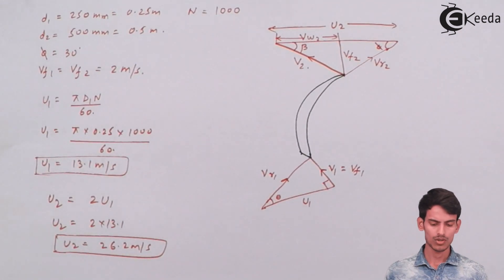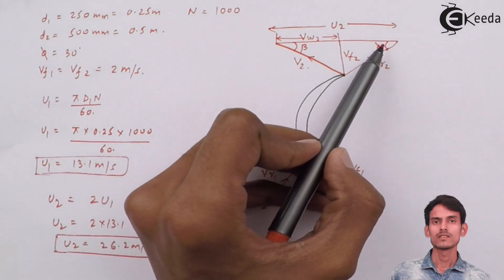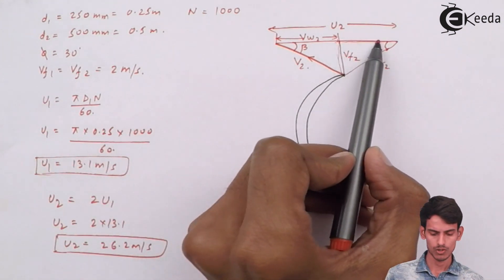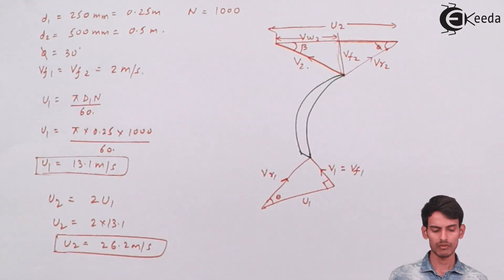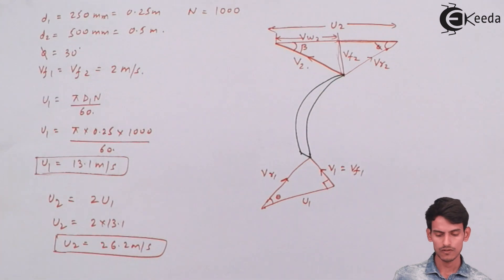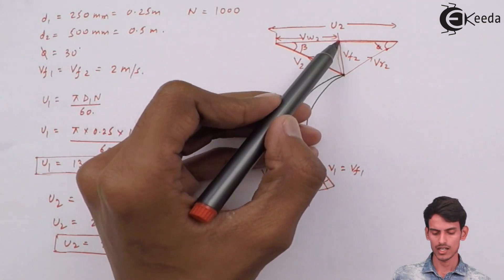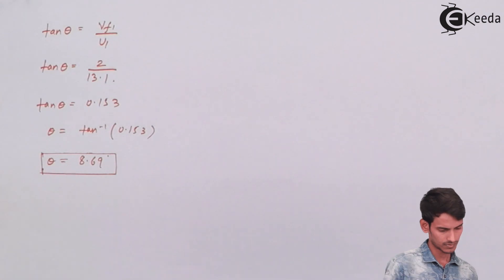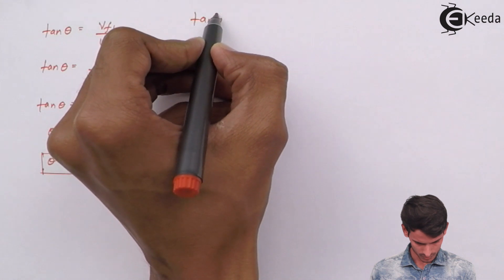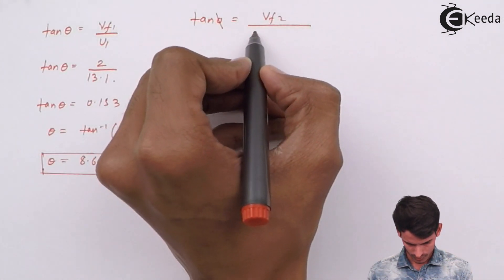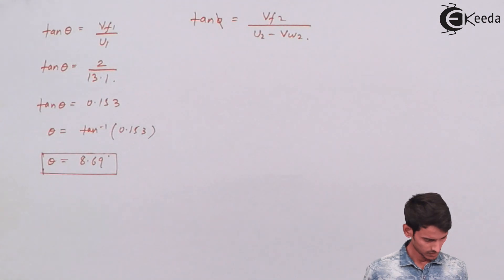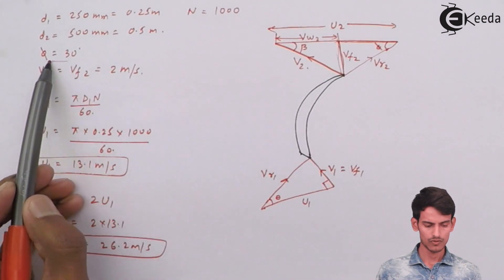At the outlet triangle, tan phi equals opposite over adjacent. The opposite is Vf2, which is known, and the adjacent is u2 minus Vw2 — both u2 and Vw2 are involved. Since the value of phi is given as 30 degrees, we can use tan phi to get the value of Vw2.